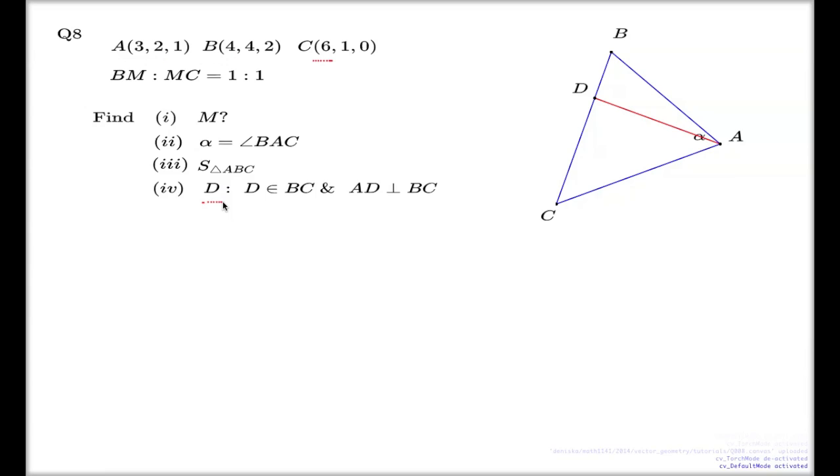We also know that there is a point D on BC here. This symbol, if I haven't explained that symbol, this is a symbol which says belongs to. So D belongs to the segment BC. It's here on the picture, on the graph.